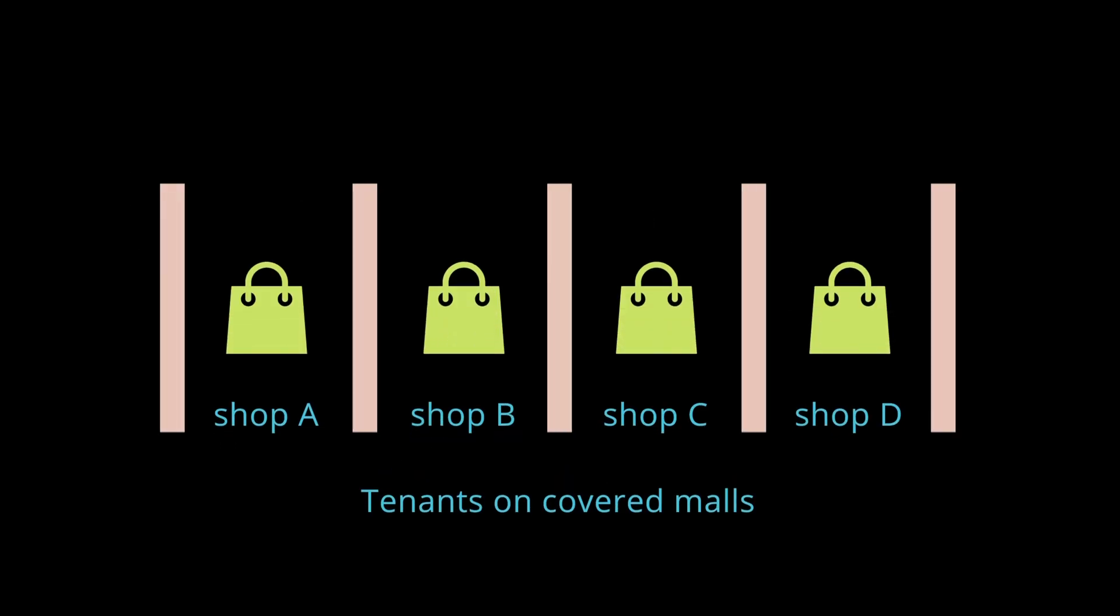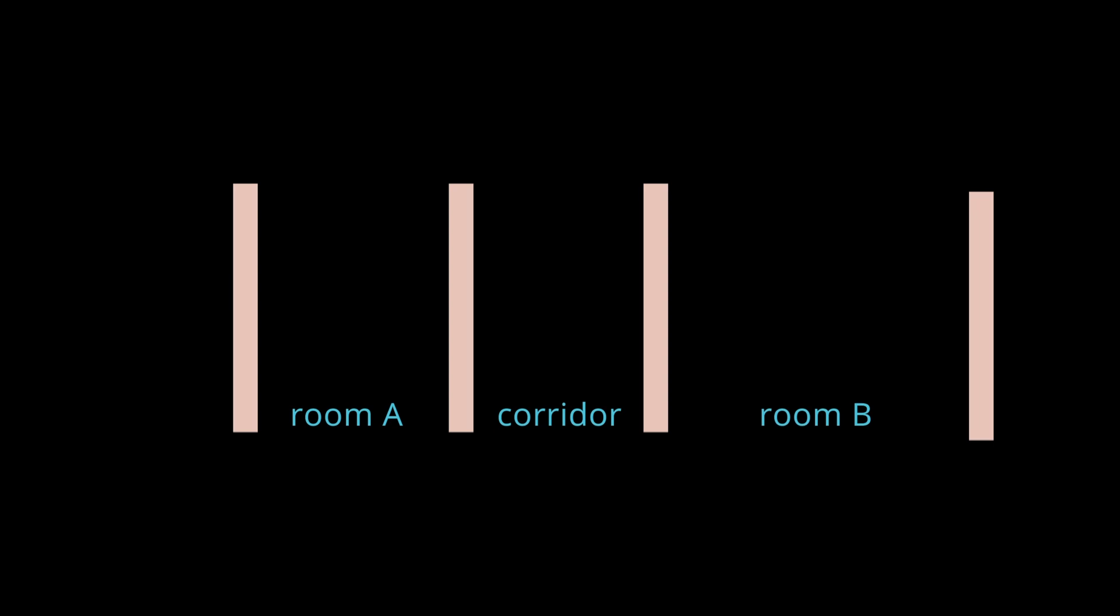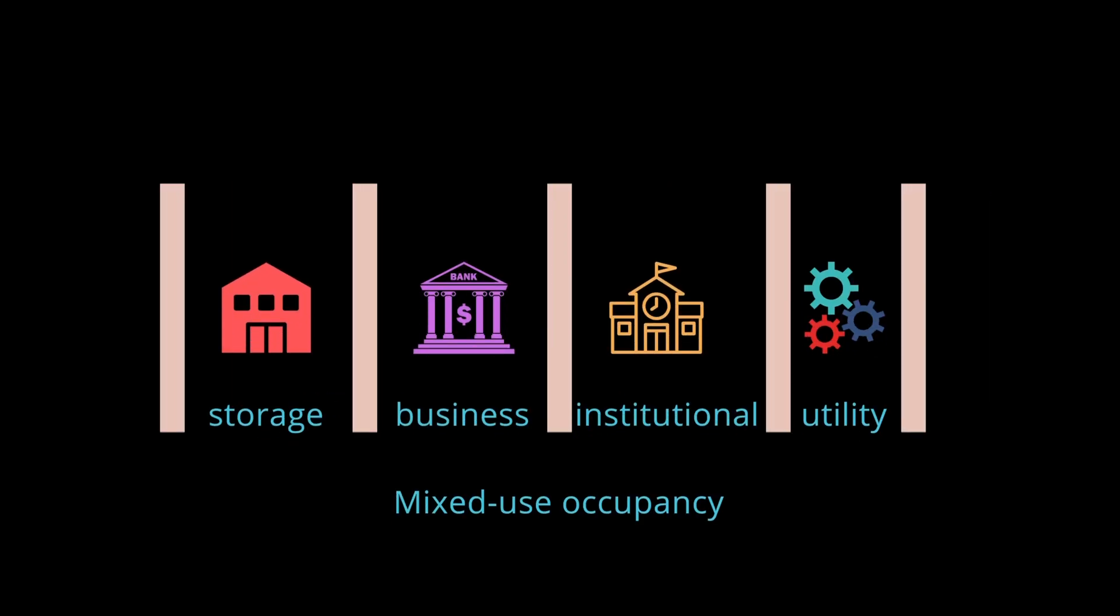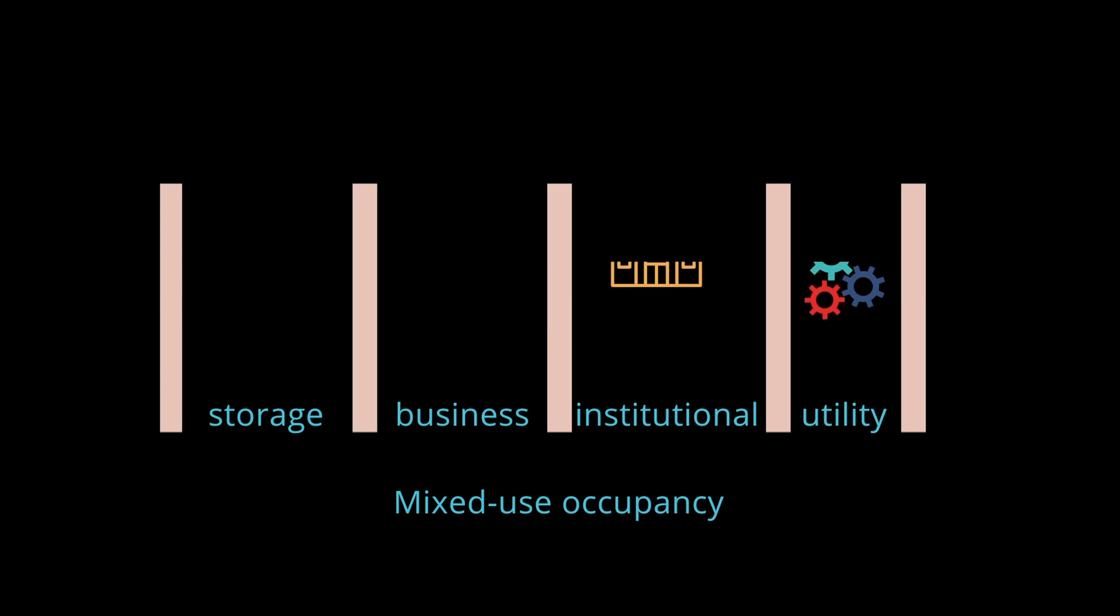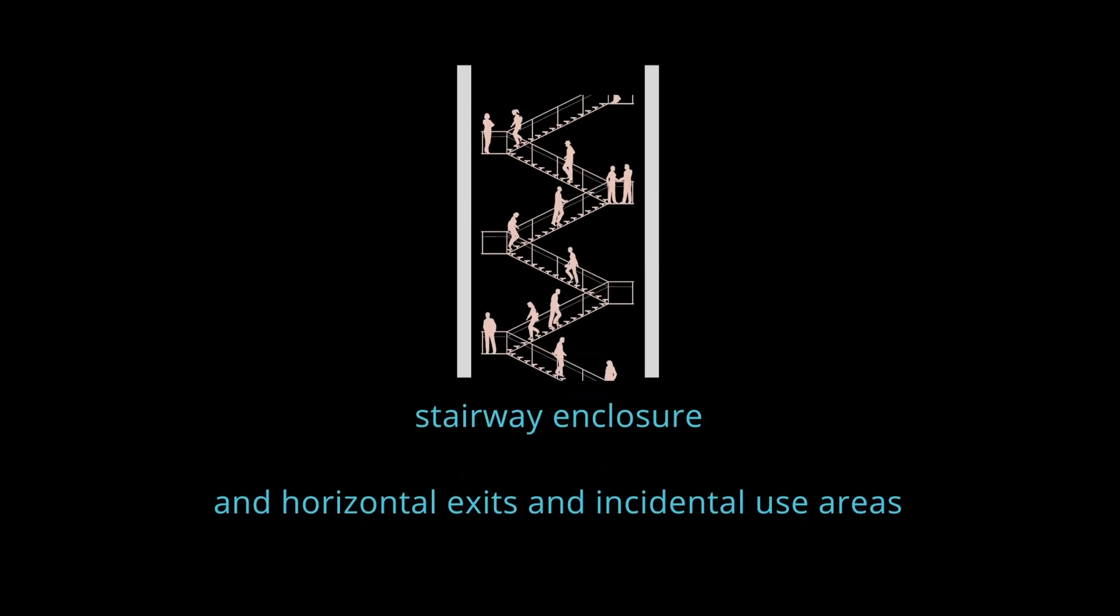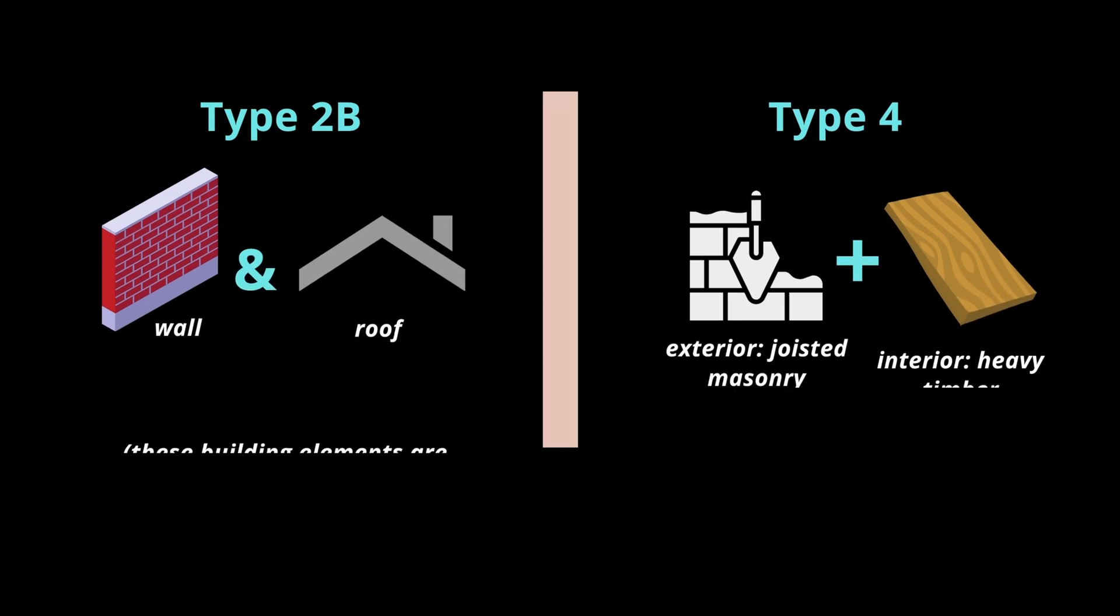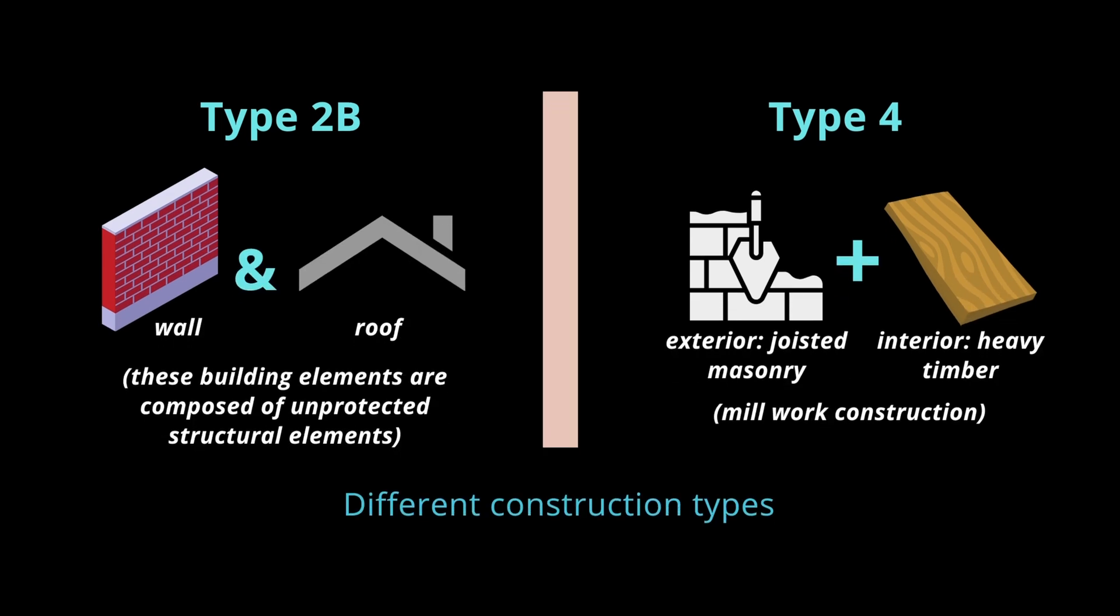Fire barriers are used as separators for mixed-use occupancy, enclosure for stairways, and separating a single occupancy room from a fire area. Firewalls are used to separate different construction types.